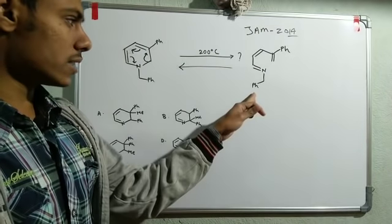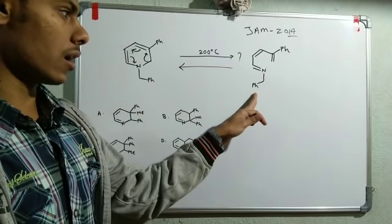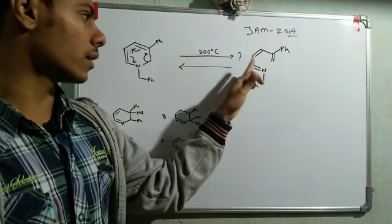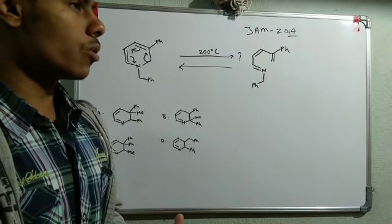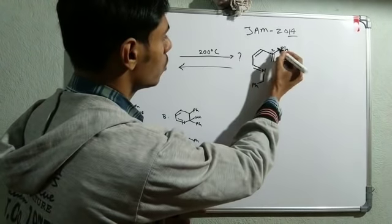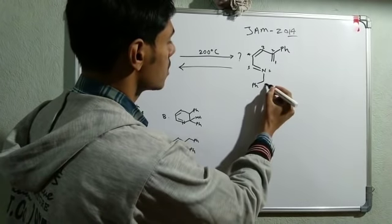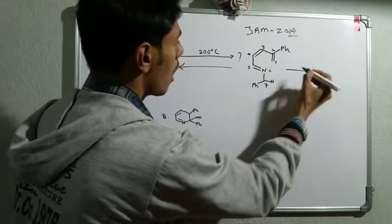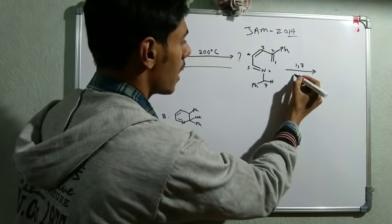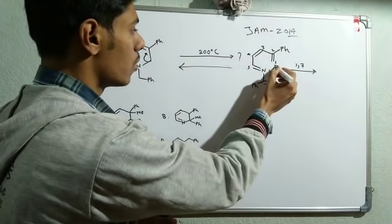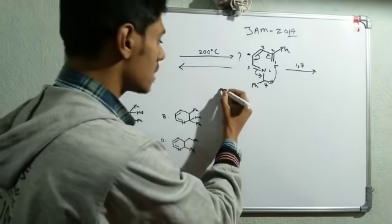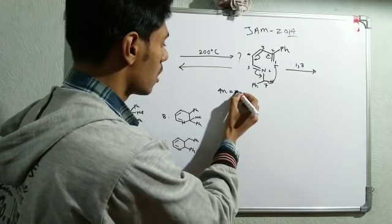If you look at this particular product carefully, you can find another reaction. Pause the video for a few seconds and think about what reaction you can identify. If you number the atoms — 1, 2, 3, 4, 5, 6, 7 — here you have one hydrogen at position 7. So in heating conditions there is a possibility of a 1,7-hydride shift. This hydride can migrate, giving a 1,7-hydride shift.